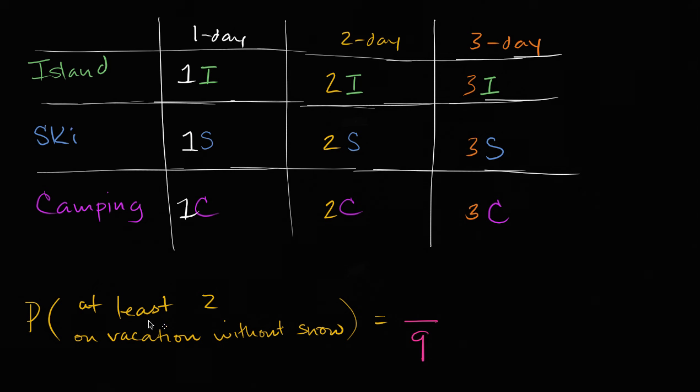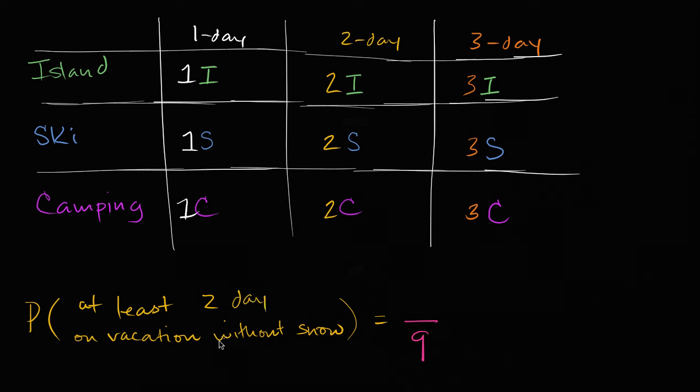Now, how many of the outcomes satisfy this event, this constraint? At least two days without snow. You're essentially avoiding skiing. You want at least two days on something other than skiing, and we're assuming you're camping in some place that's warm.